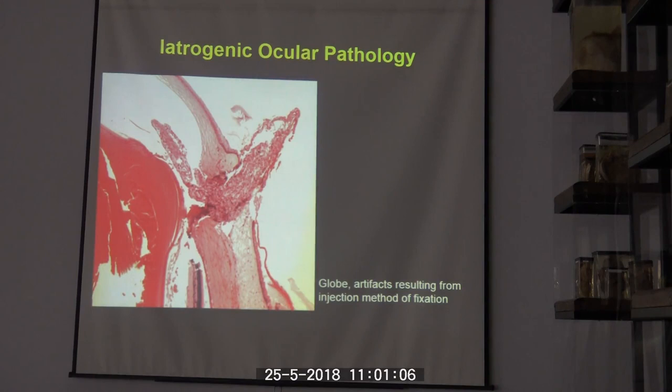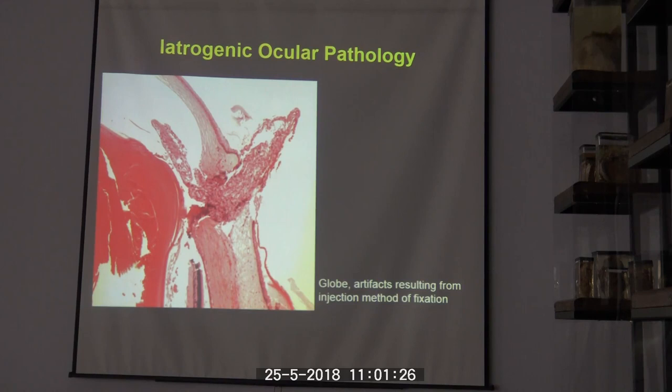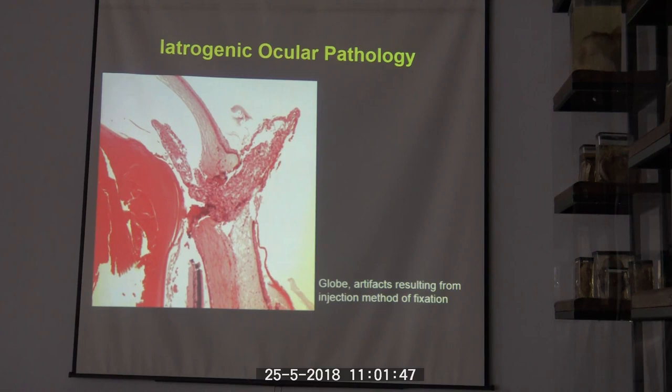We had one case where adipose tissue was injected into the subretinal space — we were initially stumped, as you don't expect adipocytes within the globe. We then found out it was an ostrich eye that had been injected at the time of necropsy, and a little white spot at trimming that looked like a real lesion was actually artifact. Once informed of the injection, we disregarded that change.